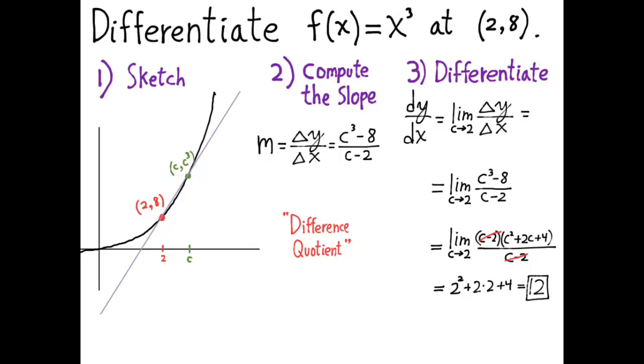And the answer is 12. The slope of the tangent line of the curve y equals x cubed at x equals 2 actually is 12. So, see if you can do other examples like this on your own.